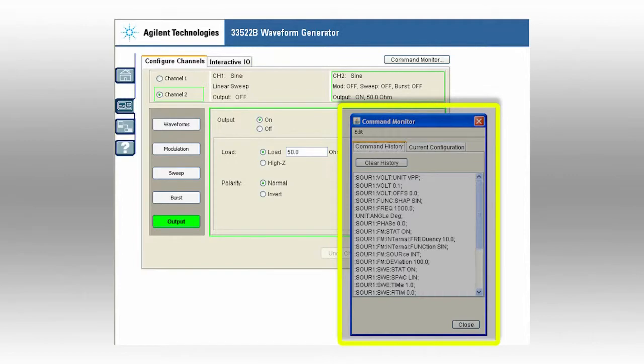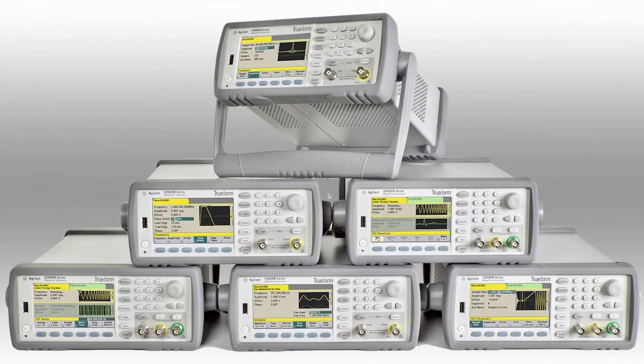Additionally, SCPI commands are automatically created as you change instrument setups. As you can see, the 33500B series of waveform generators are packed with performance at a very reasonable cost.